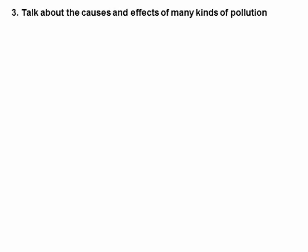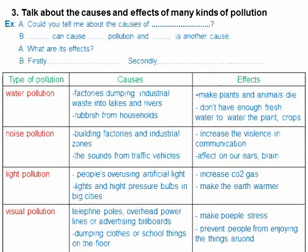Next, talk about the causes and effects of many kinds of pollution. I'll give you three columns: the first column is the type of pollution, the second is causes of pollution, and the last is effects. There are four kinds of pollution: water pollution, noise pollution, light pollution, and visual pollution. For each kind, there are causes and effects — finish the short conversation between A and B.